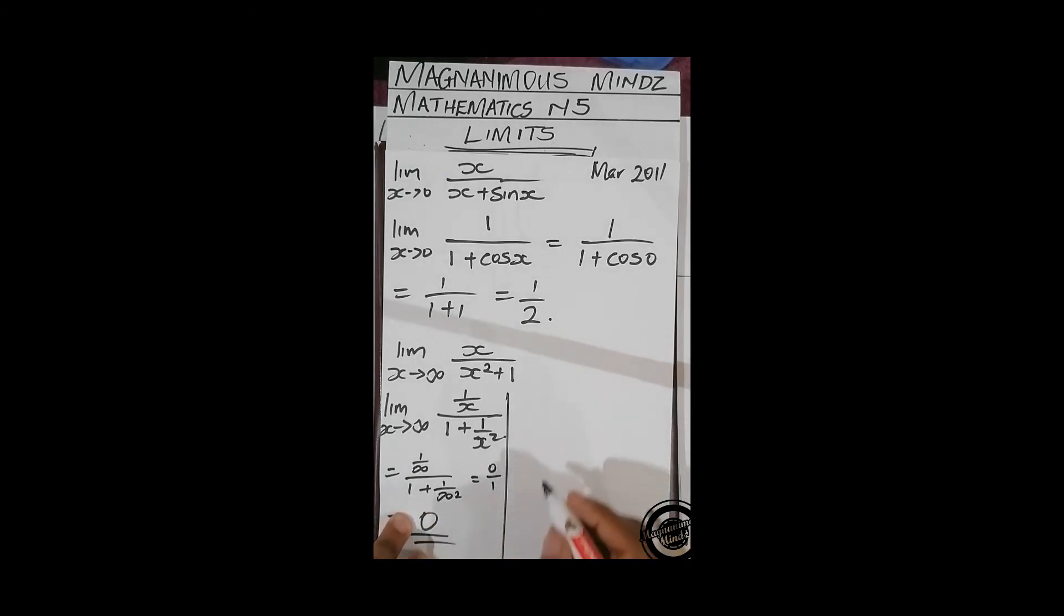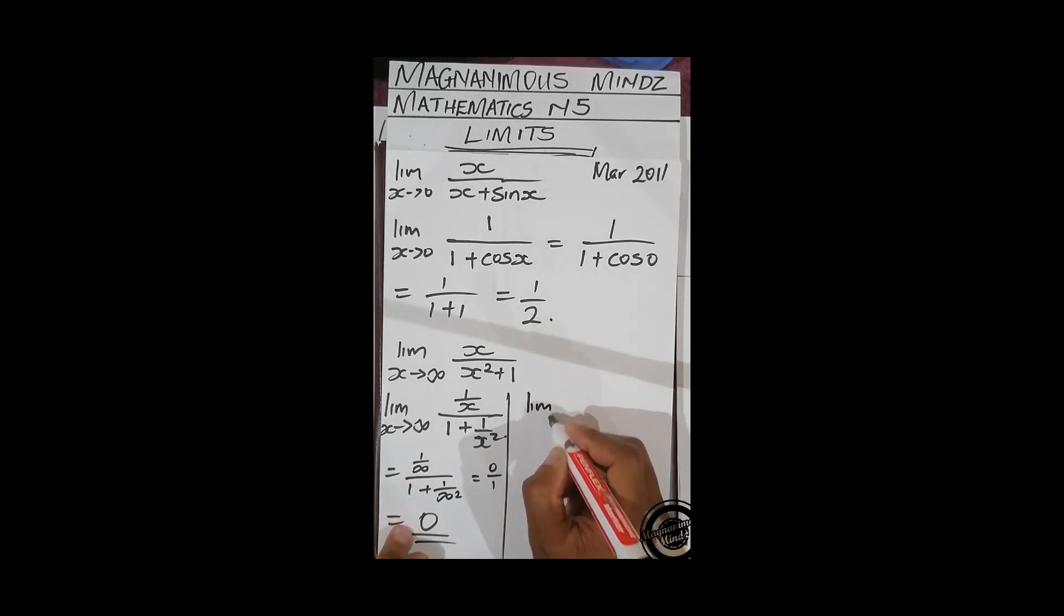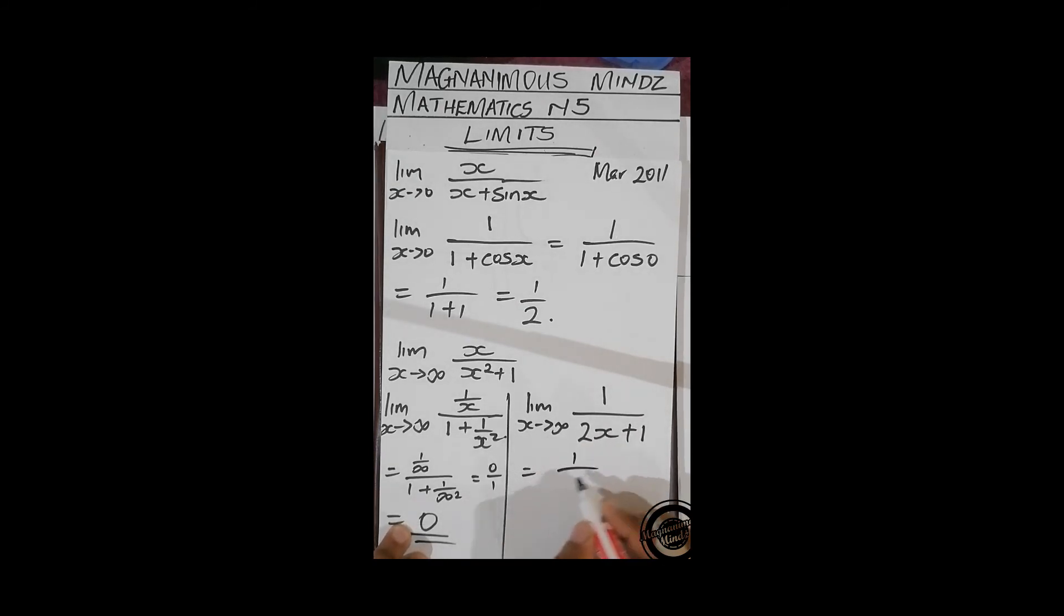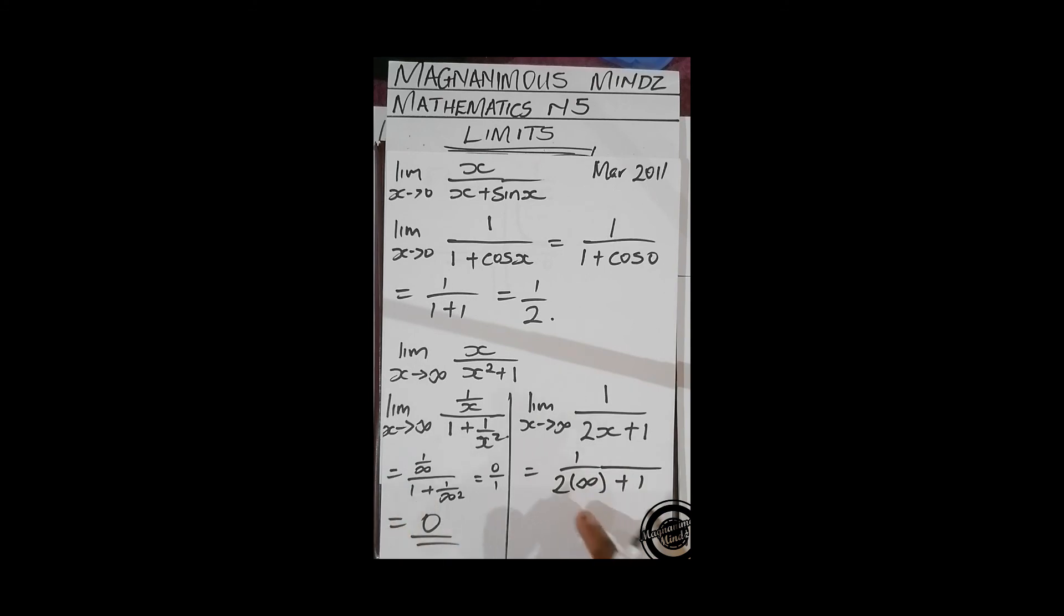And then if we use L'Hôpital, it's going to be lim x approaching infinity, then we differentiate. It's 1 over 2x plus 1. Then if we directly substitute, we're going to have 1 over 2 infinity plus 1. Then 1 over infinity is going to be 0. So zero.